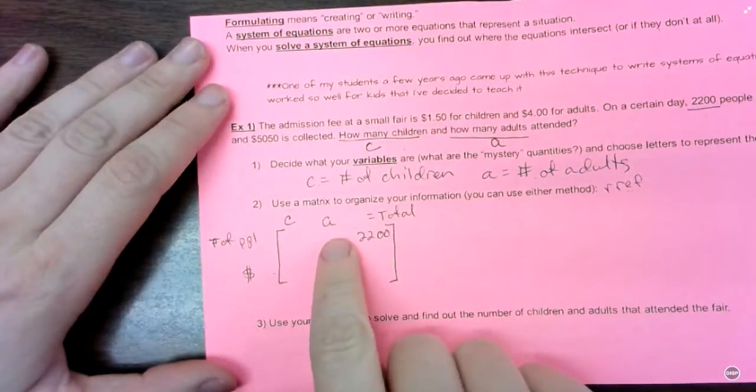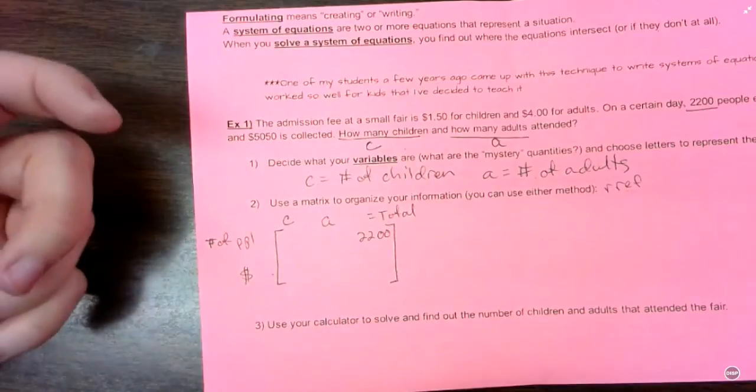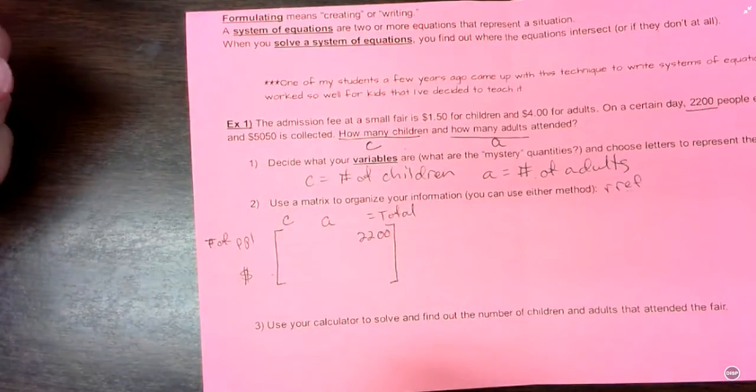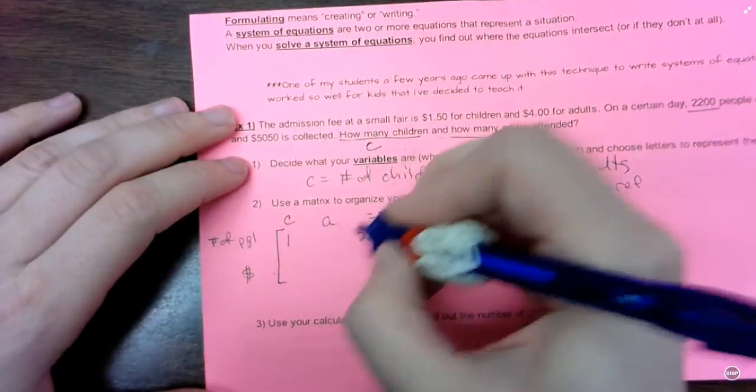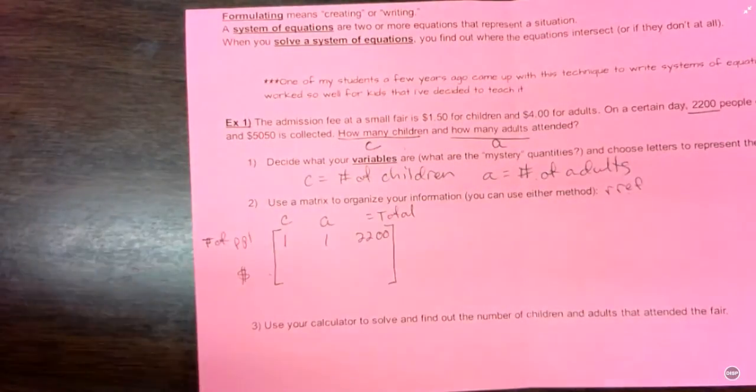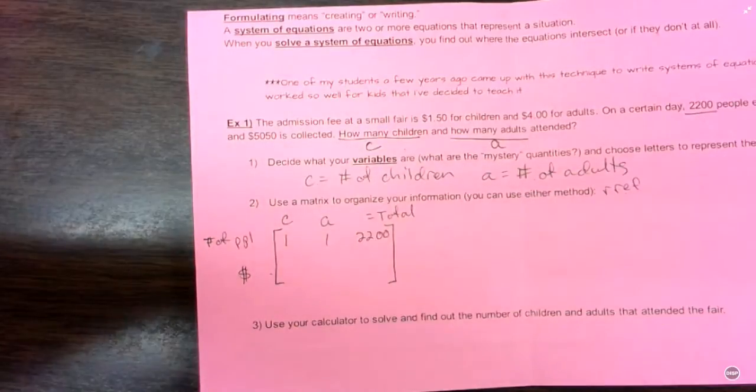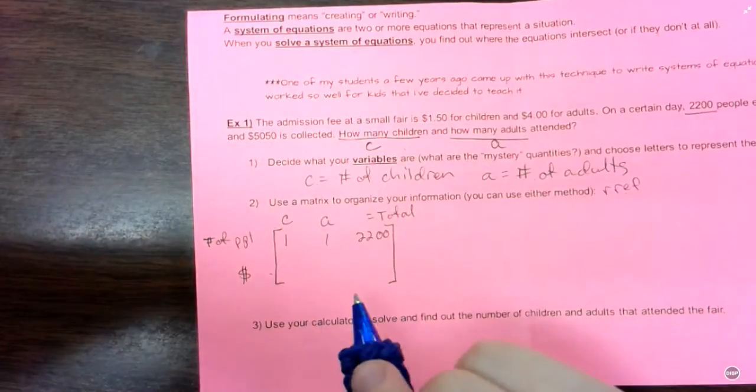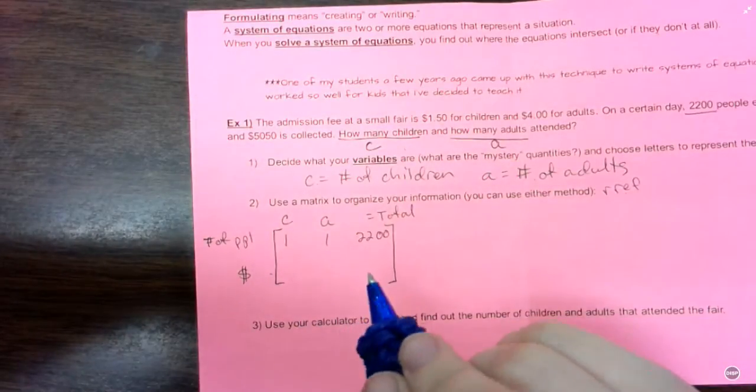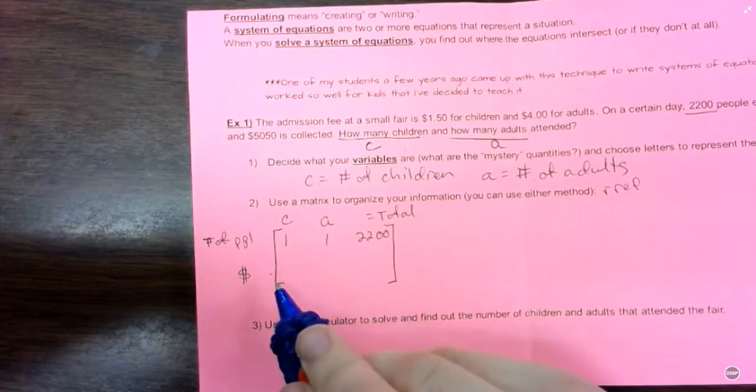2,200 total people showed up. Now for children and adults, they basically just counted them. Each child was worth one. Each adult was worth one. So one, one. Now if they had said like there were twice as many children, something like that, then I'd put a 2 for children.